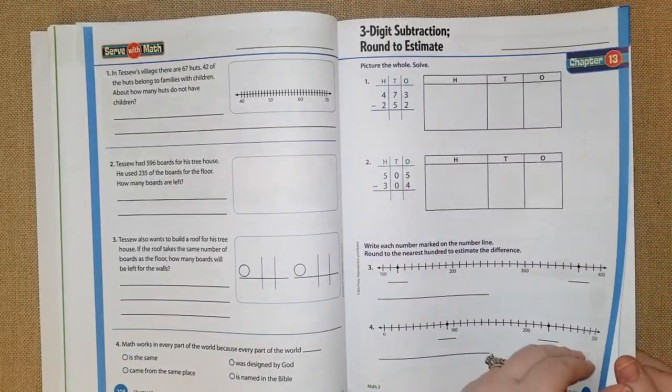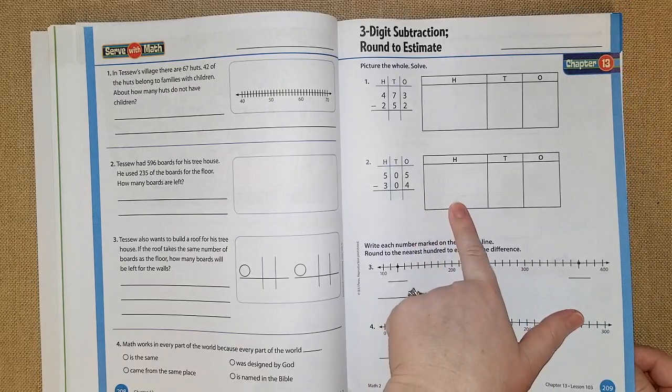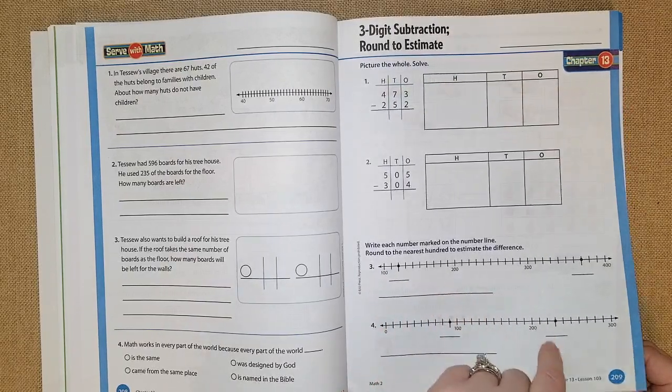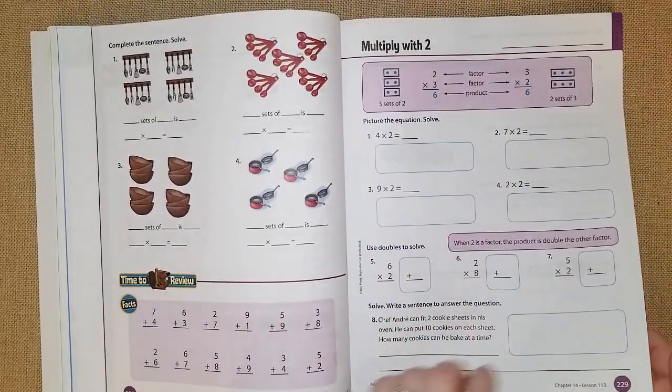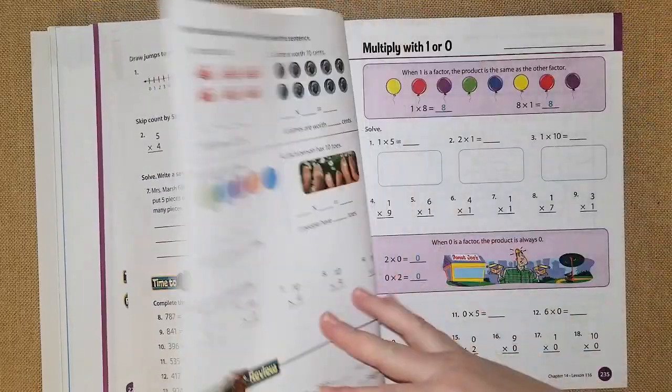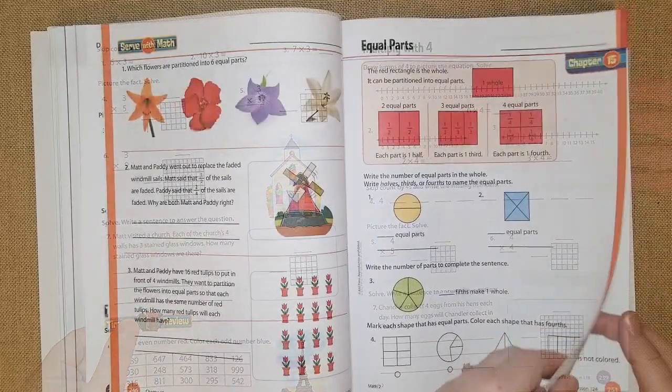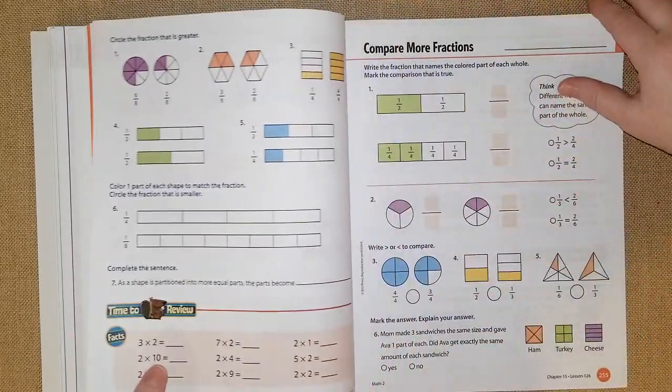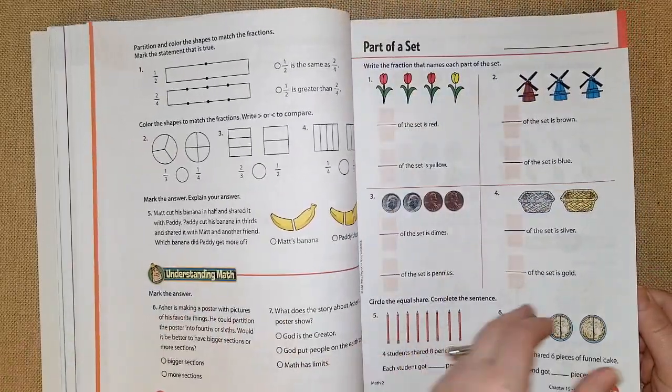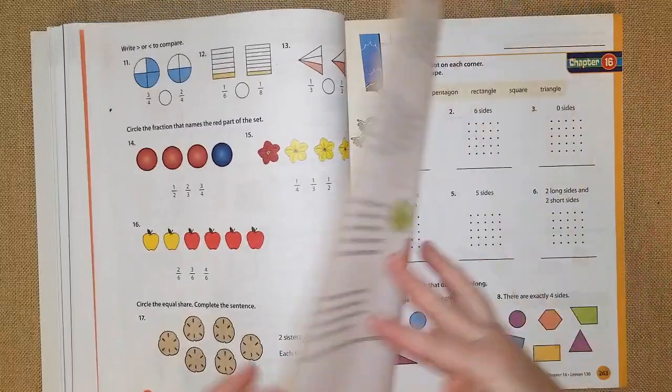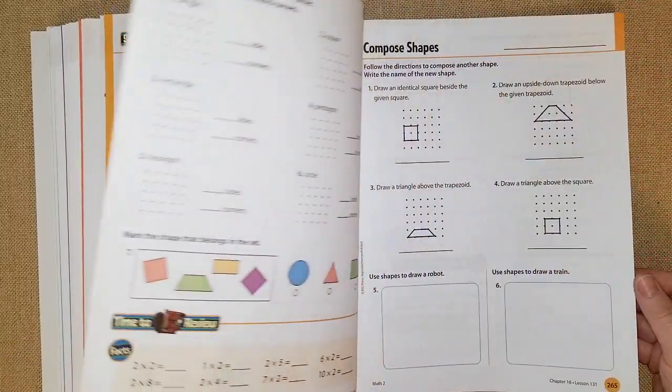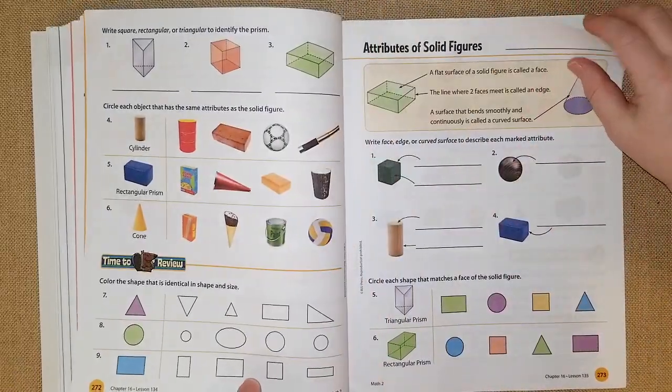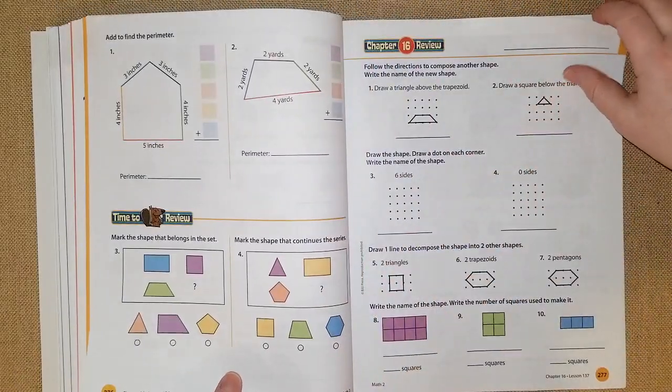And then in chapter 13 they're doing three digit subtraction, round to estimate, and they have a column for hundreds, tens and ones, and then they have a number marked on the number line and round to the nearest hundred to estimate the difference. Chapter 14 they're doing equal sets, multiplying by two, multiplying by five, ten and one and zero. In chapter 15 they're talking about fractions, equal parts, they're writing down fractions, partition shapes, compare fractions, compare more fractions, part of a set, and they're reviewing at the end of the chapter. Chapter 16 they're doing plane shapes, composed shapes, decomposed shapes, solid figures, prisms, attributes of solid figures, perimeters, and then they're doing a review.